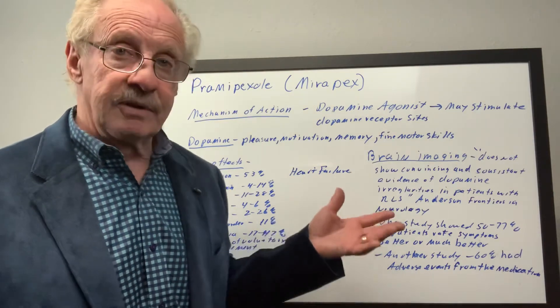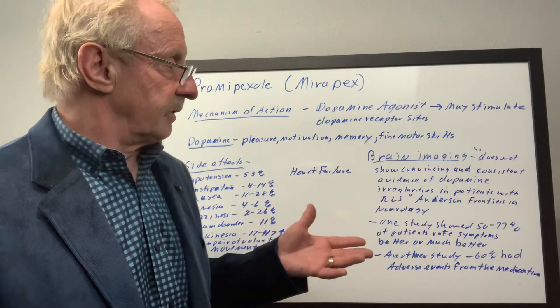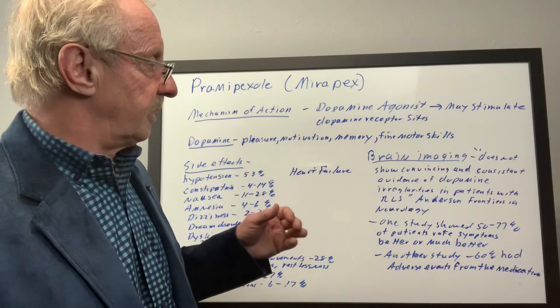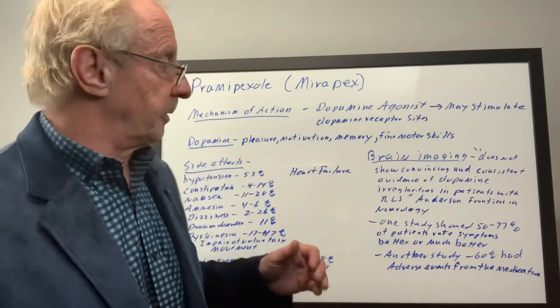If imaging is done, they're not seeing really any consistent, conclusive results showing that the brains are that much different because of dopamine irregularities in those that suffer from restless legs.